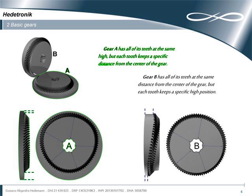The Headatronic Gear A has all of its teeth at the same height, but each tooth keeps a specific distance from the center of the gear. Gear B has all of its teeth at the same distance from the center of the gear, but each tooth keeps a specific height position.